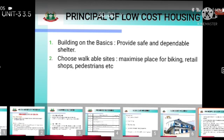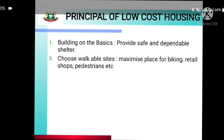Next principle is to choose walkable sites – maximizing places for biking, retail shops, and pedestrian access. This means that when we build homes under schemes like Indira Awas Yojana or Pradhan Mantri Awas Yojana, the location should support easy movement and access to amenities.